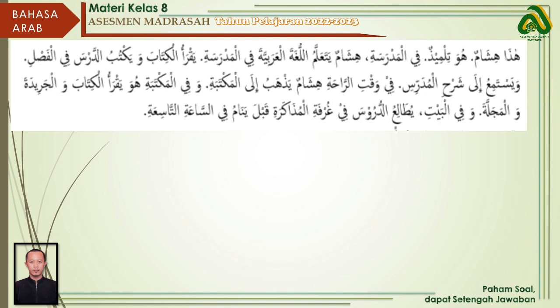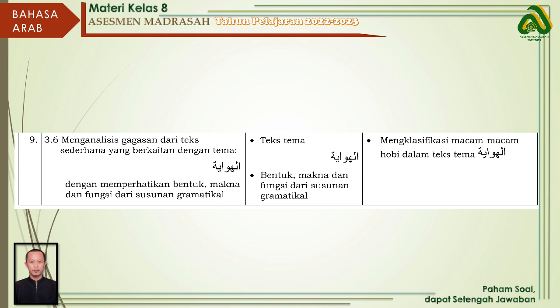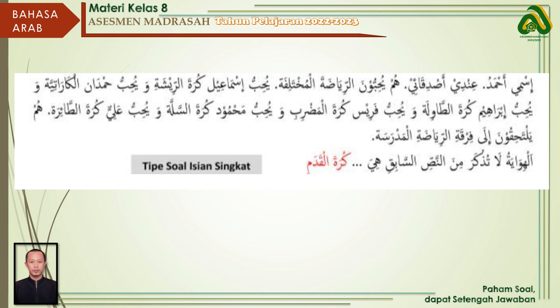Kemudian untuk kisi-kisi berikutnya tentang tema Al-Hiwayah, yaitu mengklasifikasi macam-macam hobi dalam teks tema Al-Hiwayah. Contoh soalnya: Ismi Ahmad, saya memiliki banyak teman. Mereka menyukai hobi olahraga yang bermacam-macam. Yuhibbu Ismail kurota rishah - Ismail menyukai badminton. Yuhibbu Hamdan al-Karotiy - Hamdan hobi karate. Yuhibbu Ibrahim kurota tawilata - Ibrahim suka tenis meja.